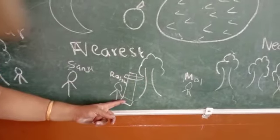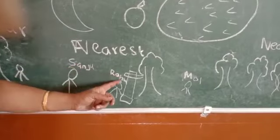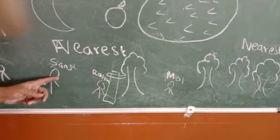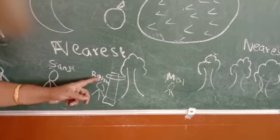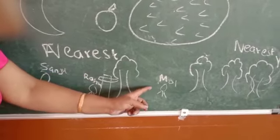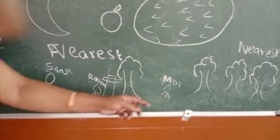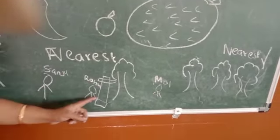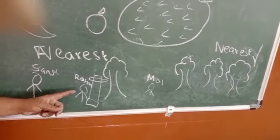See children, there is a tree and a swing. Sanju, Rohan, and Mohan—three of them are playing. Sanju is little far away, Rohan is near the swing, and Mohan is little far from the tree. Now let me ask: who is the nearest? When we compare three things we should say nearest. So who is nearest? Rohan, very good!